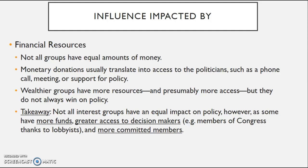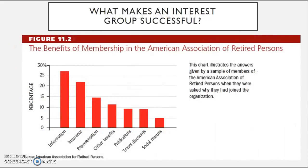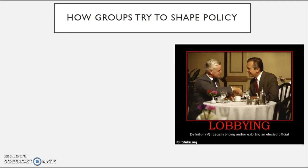As for the AARP with older people, some of the benefits of membership beyond that donut include information, some type of insurance, representation, publications, travel discounts, and the ability to network socially. So you have a wide range of benefits there.